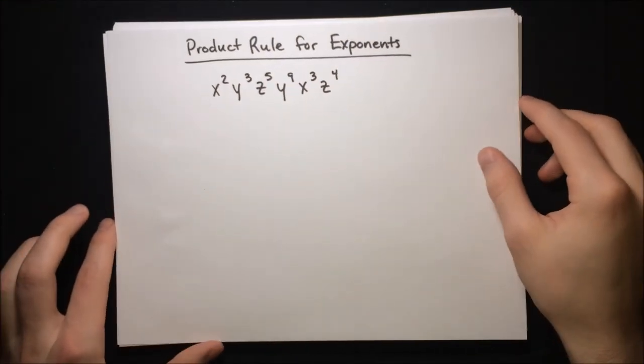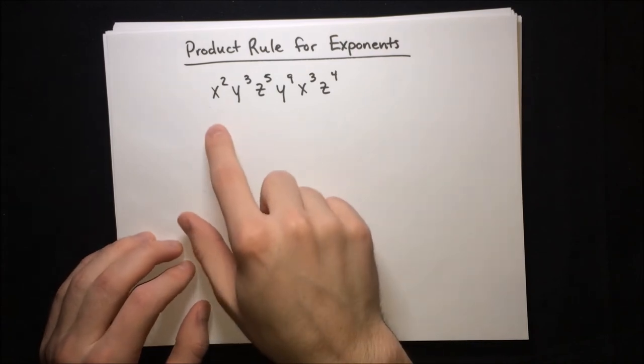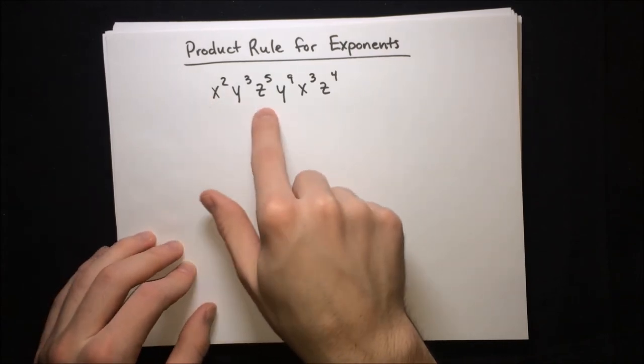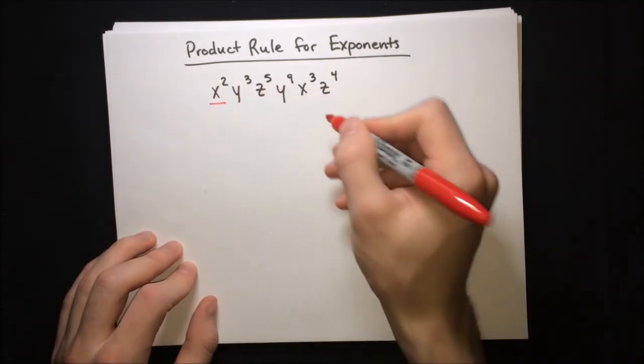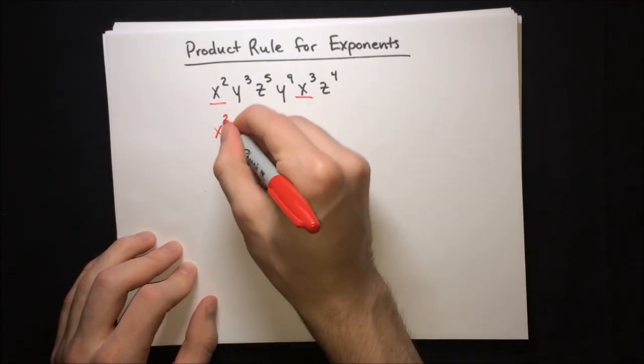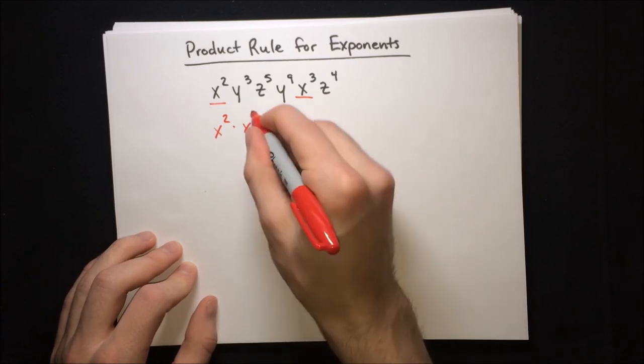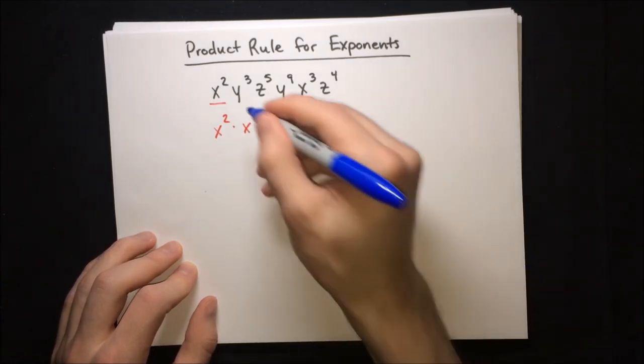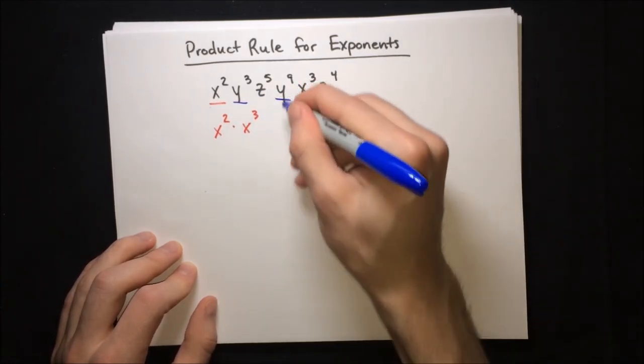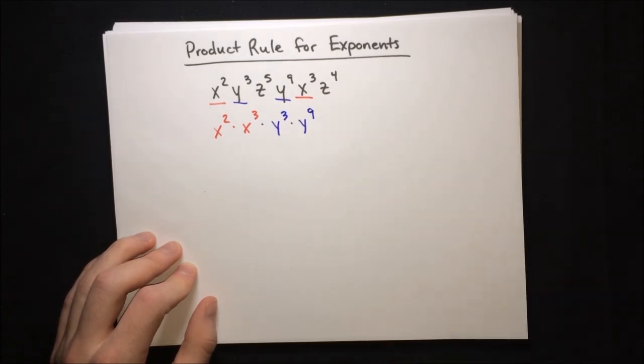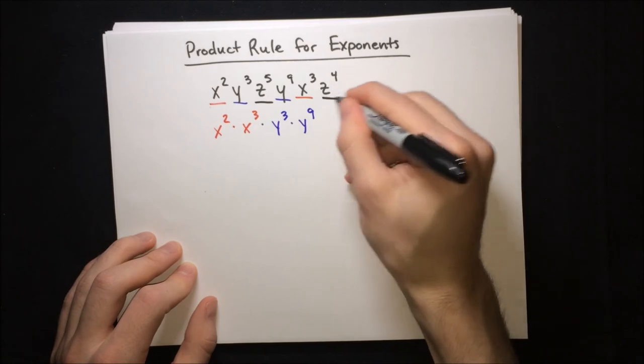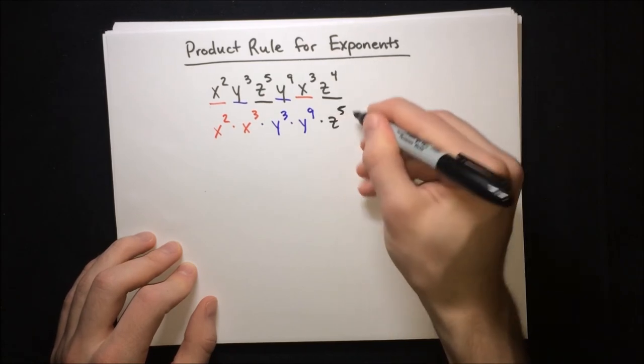Here's the final example. It's a little bit trickier because now there's a third variable, an x, a y, and a z. But it's really just the same idea. We're going to group all the similar variables together. So x squared times x to the third, and then get the y's, there's y to the third, y to the ninth. And lastly, we pick up the z's, z to the fifth, and z to the fourth.